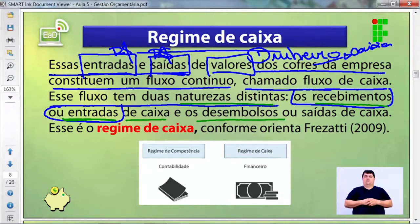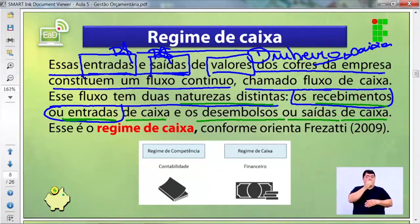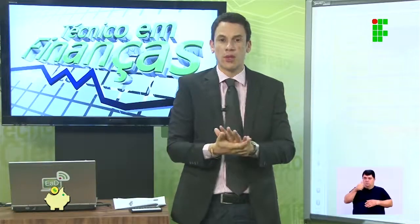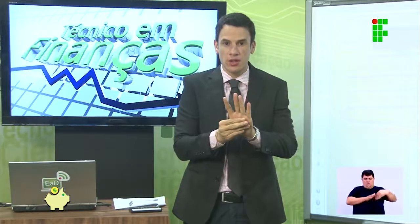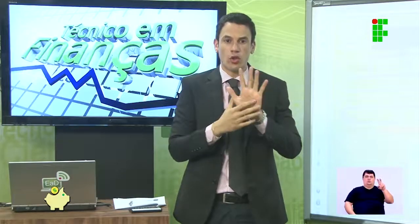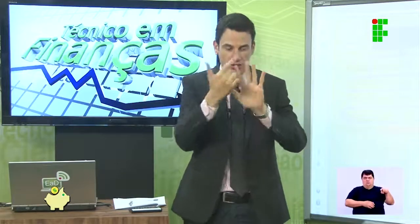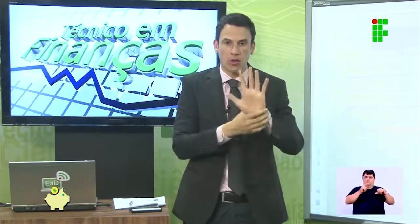A segunda natureza: desembolsos ou saídas de caixa. Por exemplo: a empresa teve um desembolso financeiro, pagou a conta de energia — saiu mil reais do caixa. Depois teve um recebimento de cinco mil. Entrou cinco mil, mas já saiu um para energia. No segundo dia, entrou mais cinco mil, totalizando nove mil, mas saiu quatro. Ficou cinco no caixa.